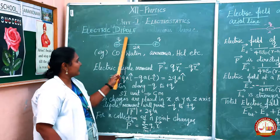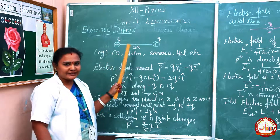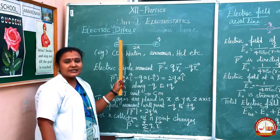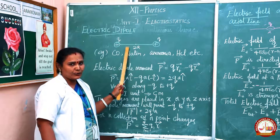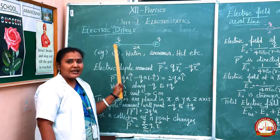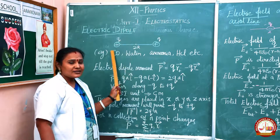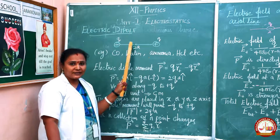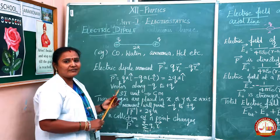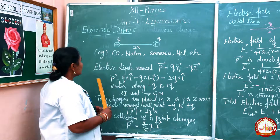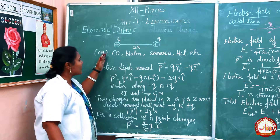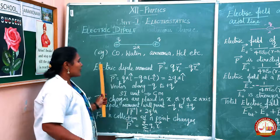The next topic is the electric dipole. Two equal and opposite charges, if they are separated by a very small distance, will constitute an electric dipole. Here you can see −q and +q, the two equal and opposite charges separated by a distance, constituting the electric dipole. Examples include carbon monoxide, water, ammonia, and hydrochloric acid.